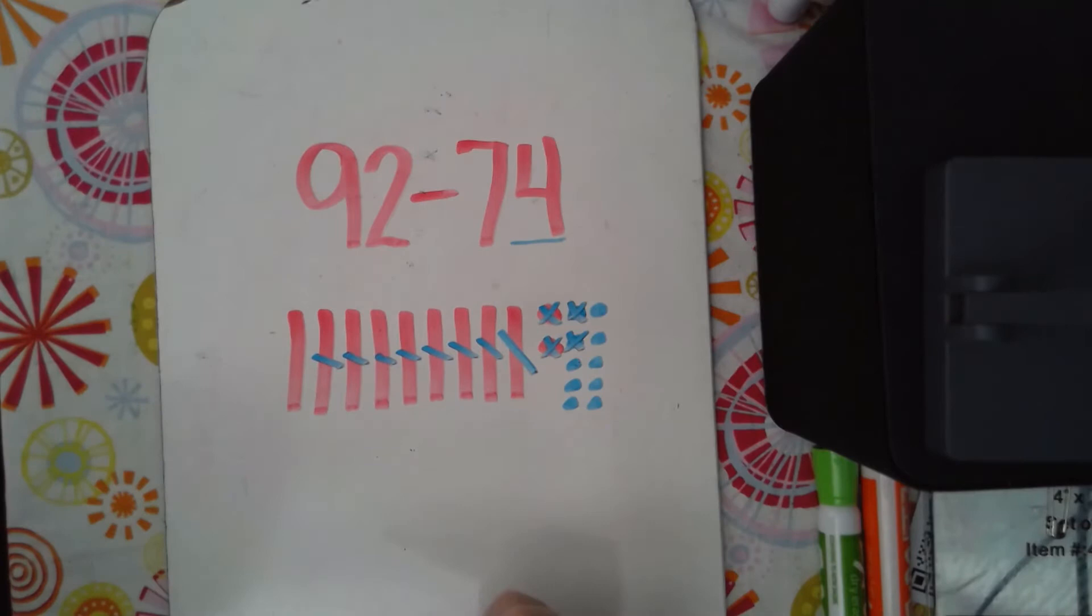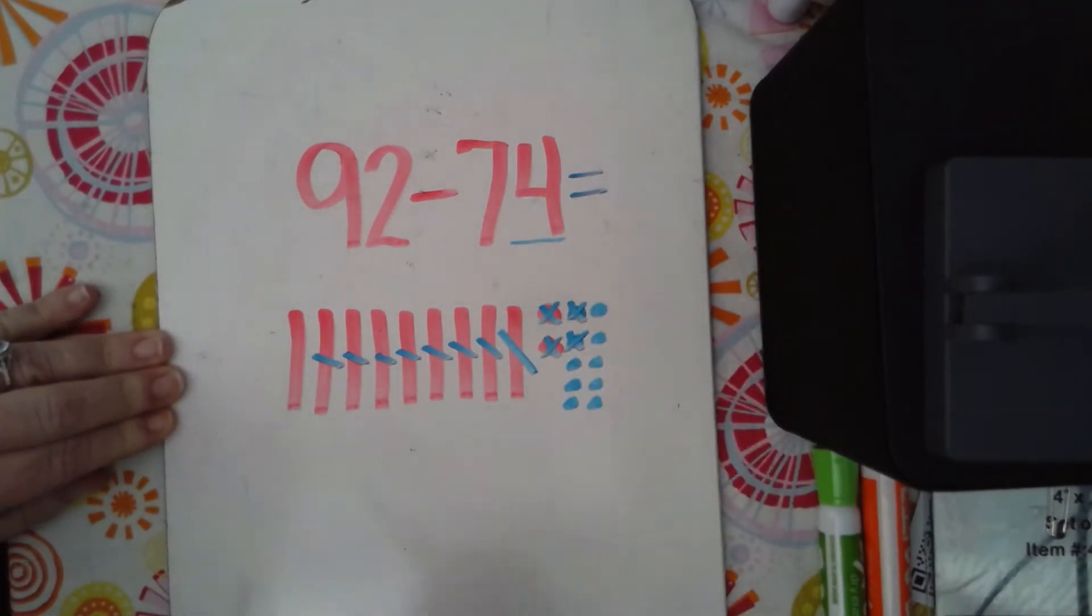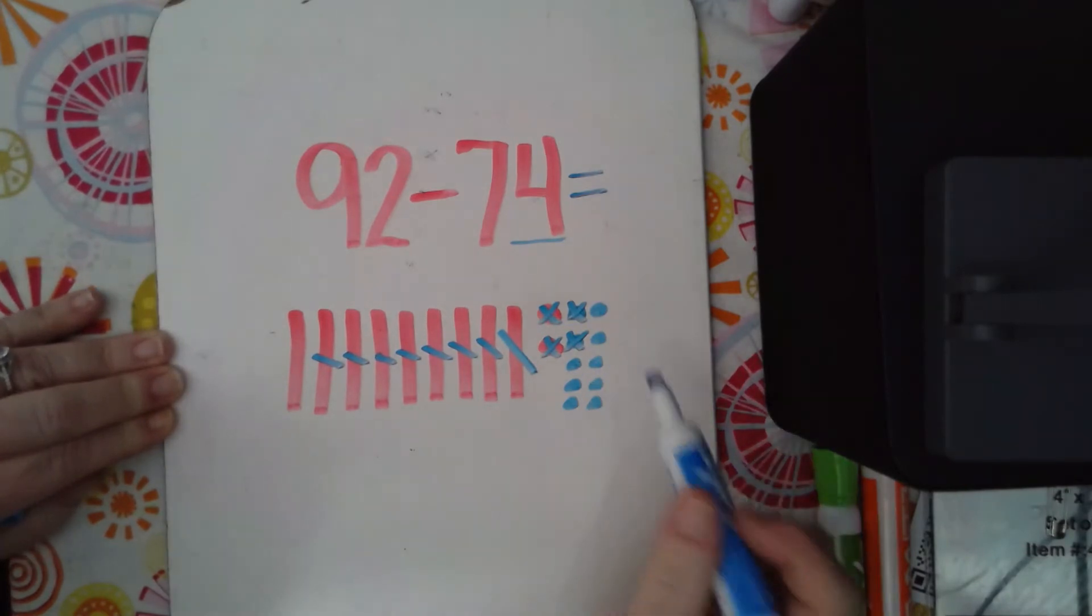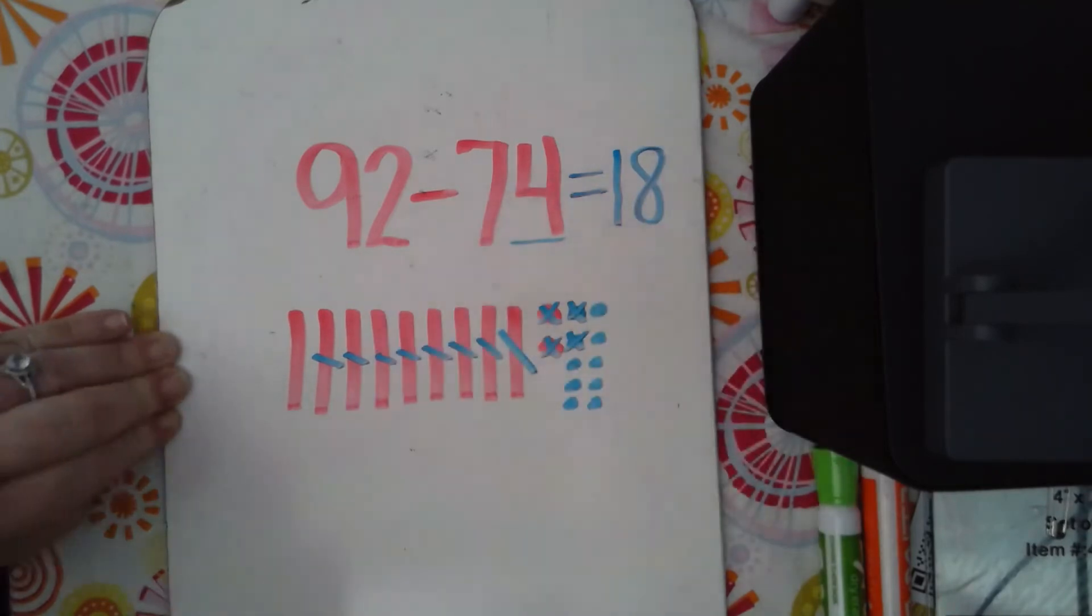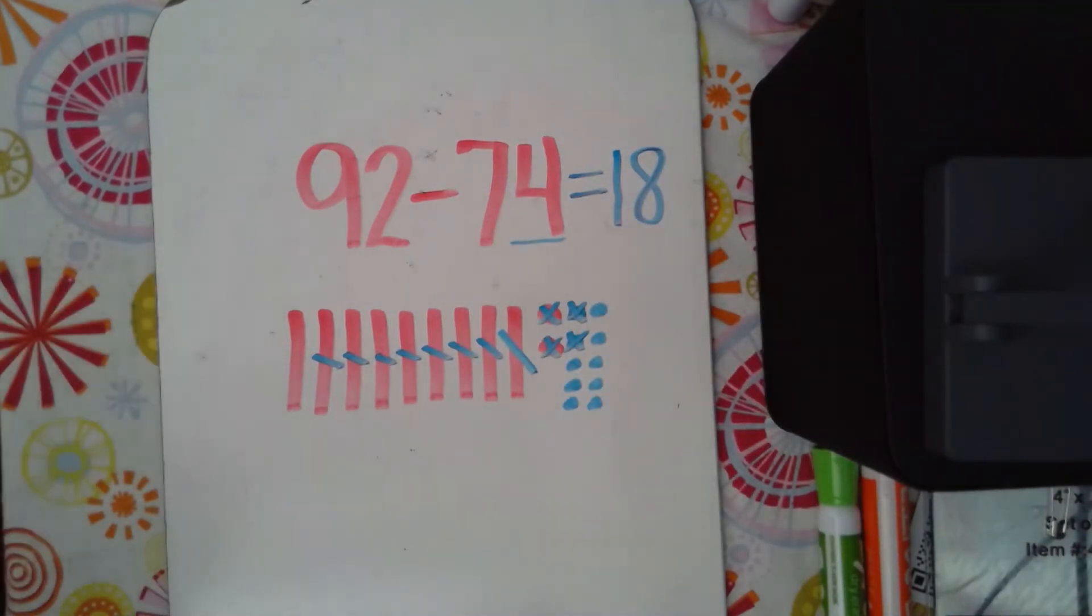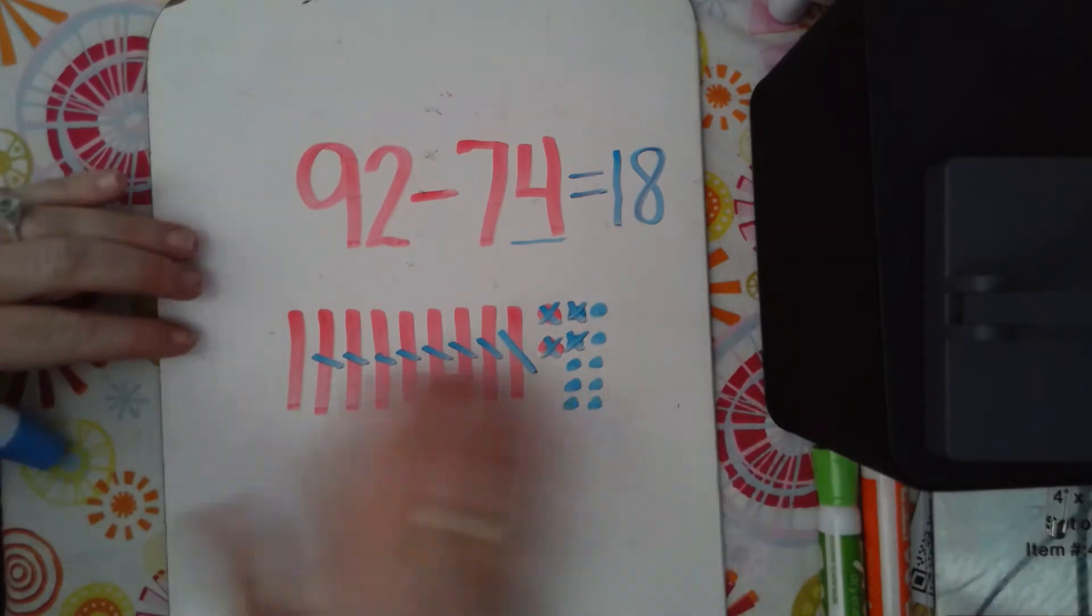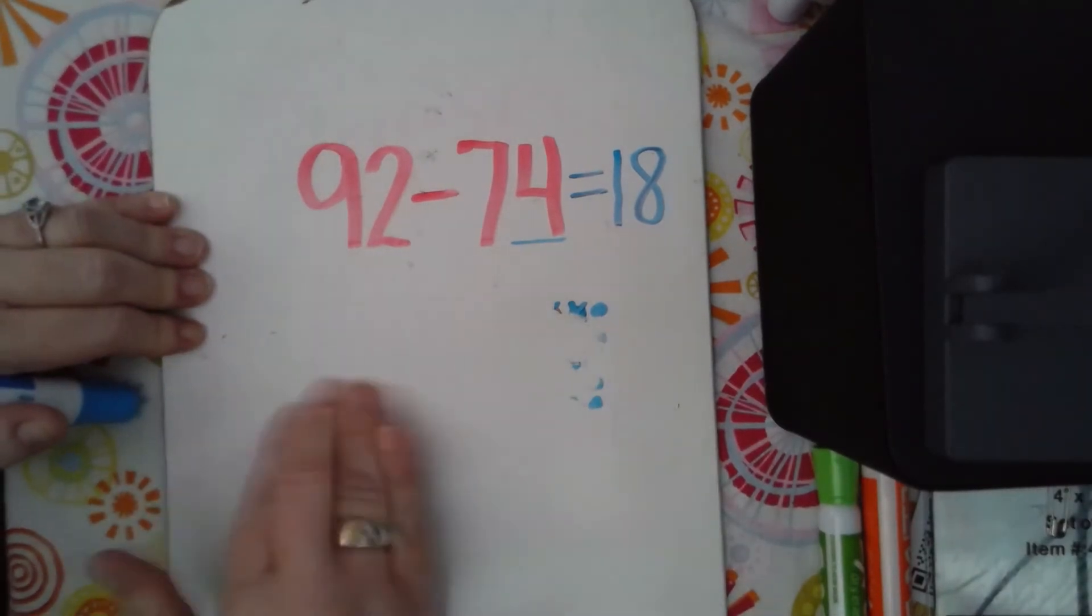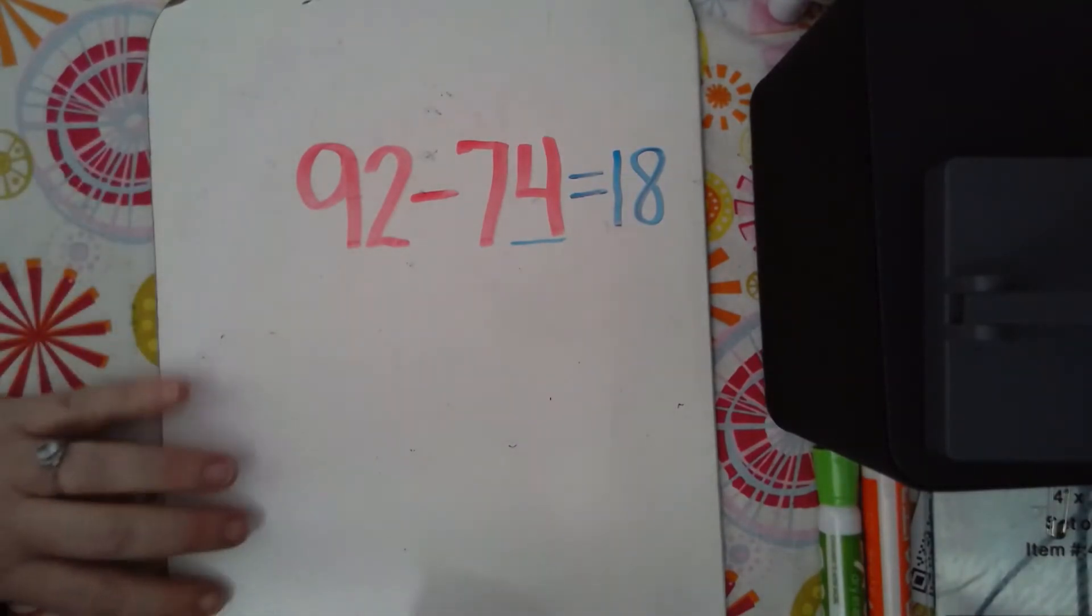And now I'm going to see what I have left, which will be our answer. I have one group of 10 and 5, 6, 7, 8 ones, which would make 1 ten and 8 ones is 18. Now, modeling was not our goal of this video. It was to use addition to check our subtraction. So I'm going to quickly erase our model here and we are going to add to check ourselves.